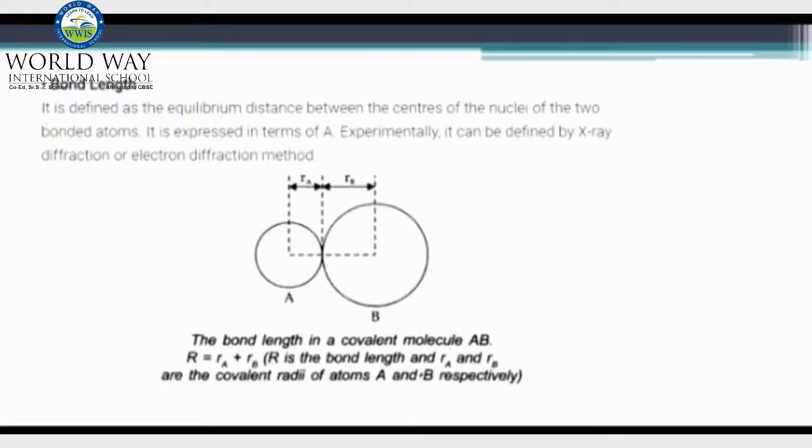Bond length is defined as an equilibrium distance between the centers of the nuclei of the two bonded atoms. It is expressed in the terms of angstroms and can also be defined by X-ray diffraction studies.